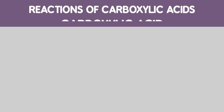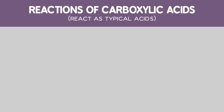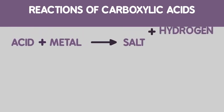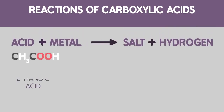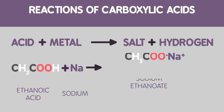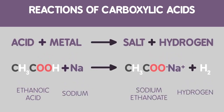Let's have a look at the reactions of carboxylic acids. Carboxylic acids react as typical acids. Number 1: acid plus metal goes to salt plus hydrogen. For example, ethanoic acid plus sodium gives sodium ethanoate and hydrogen.